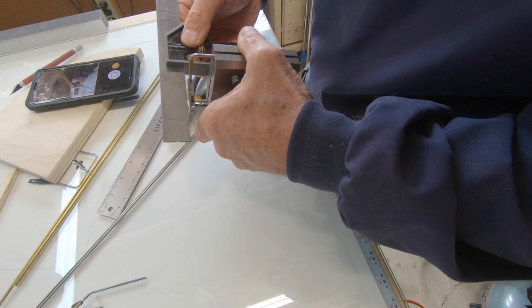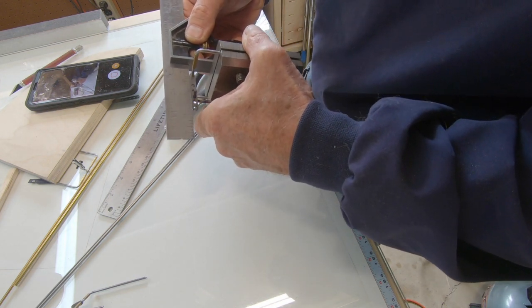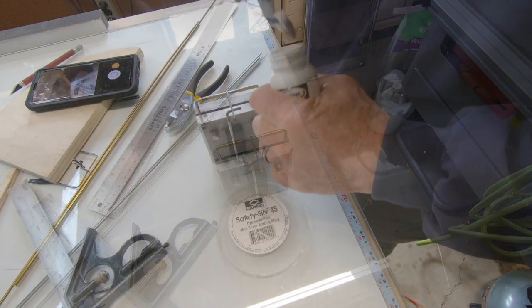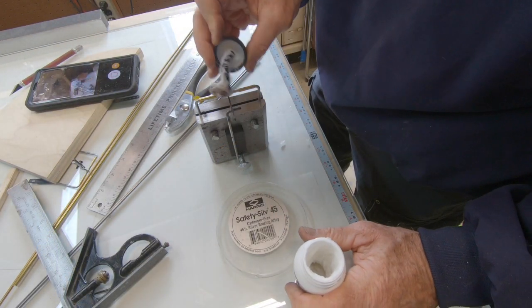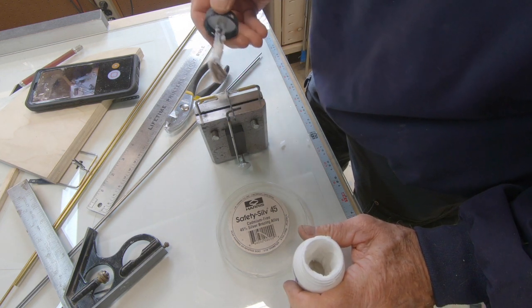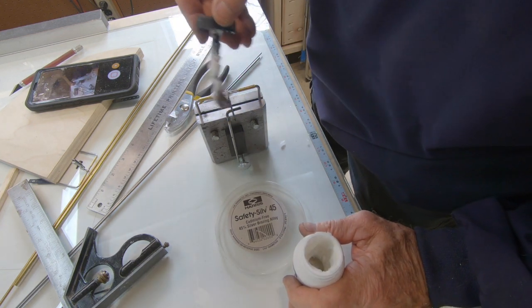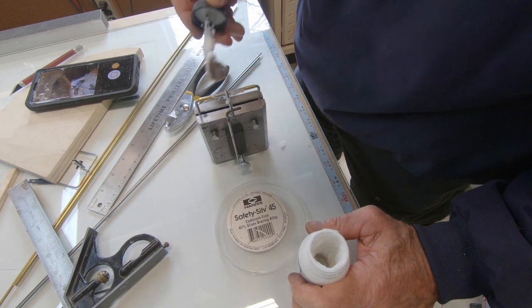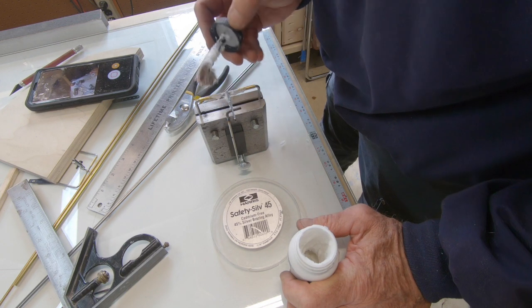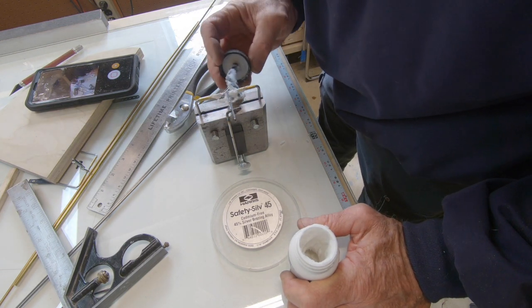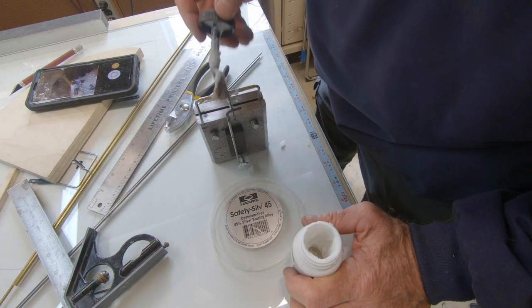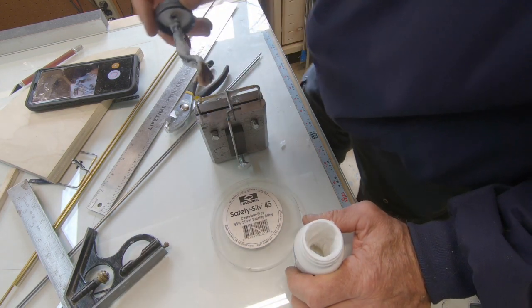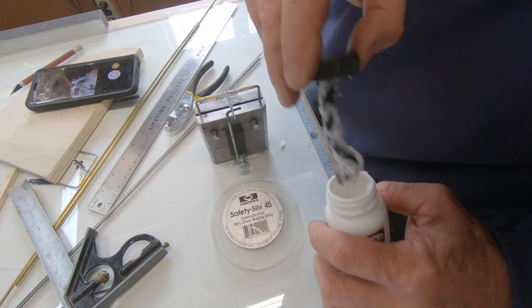So at this point, you can take your time, get it exactly where you want it. And what I do, I really load this thing up with flux. I try to keep the whole horn encapsulated in flux while it's being braised to keep the oxygen off of it, or at least in the center here where it hits the heat.